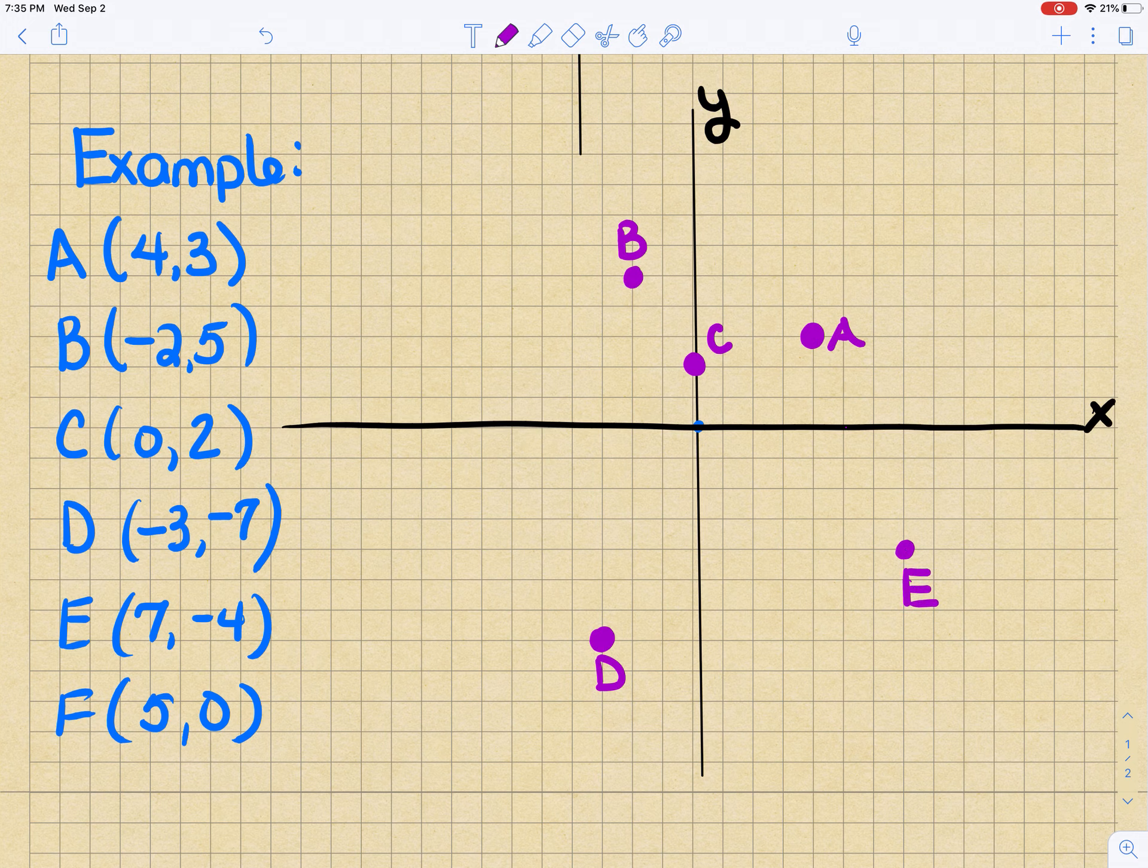And then the last one I chose was F at (5, 0). So that means we go 5 to the right from the origin, but we don't move in any direction y because y is 0. And so that's my F.